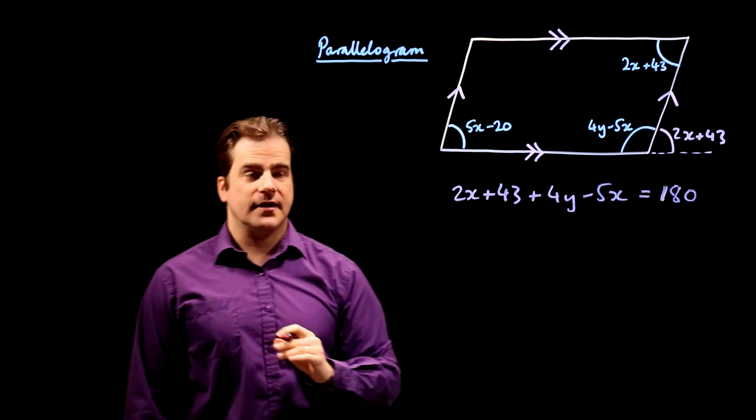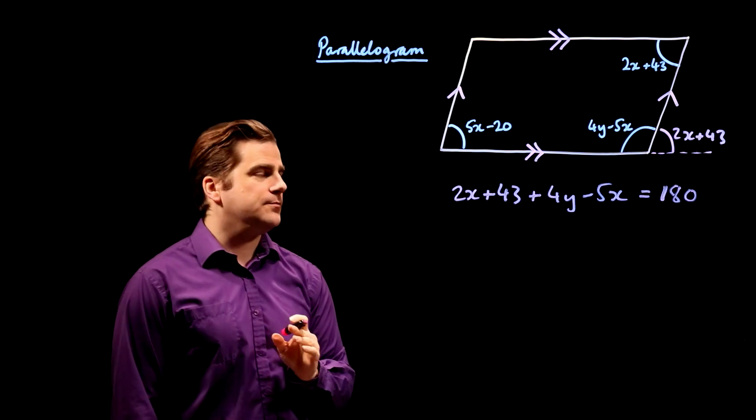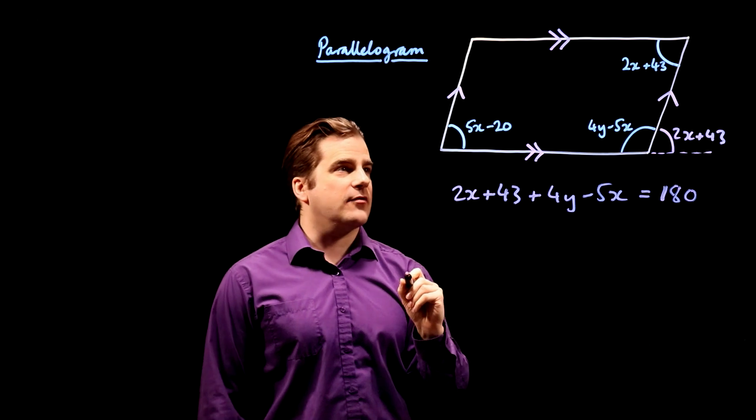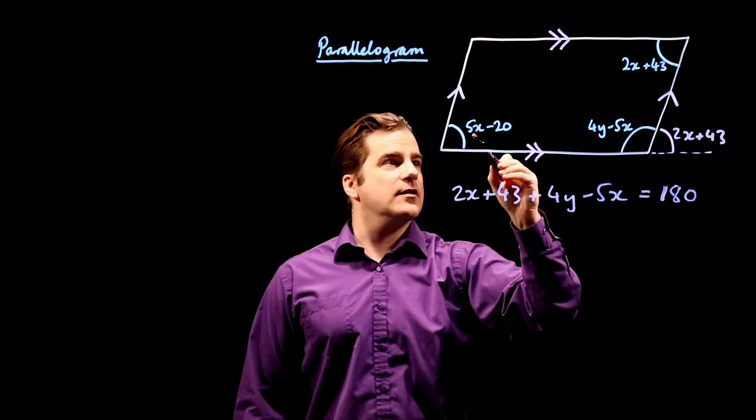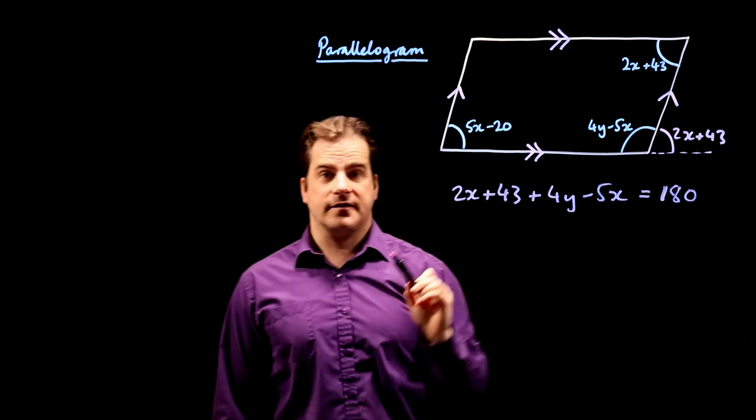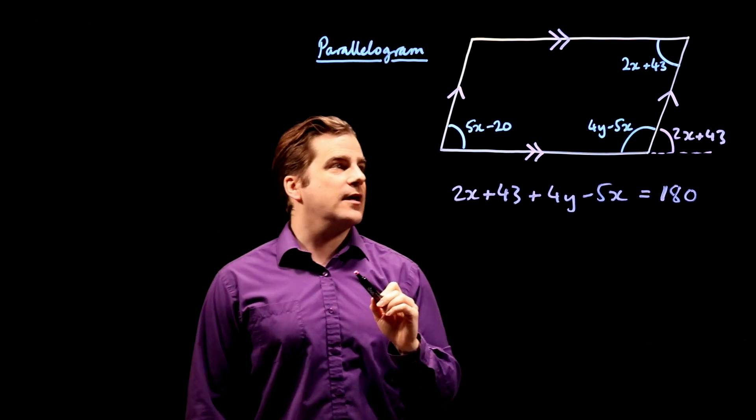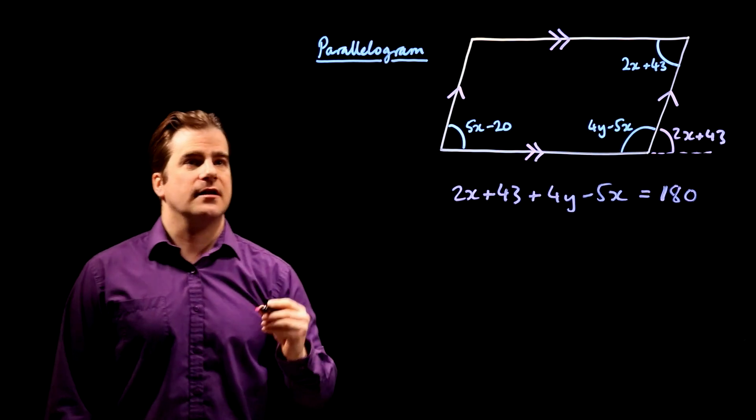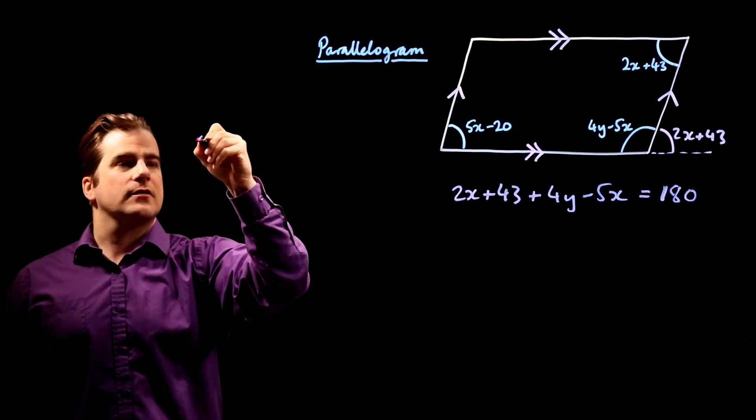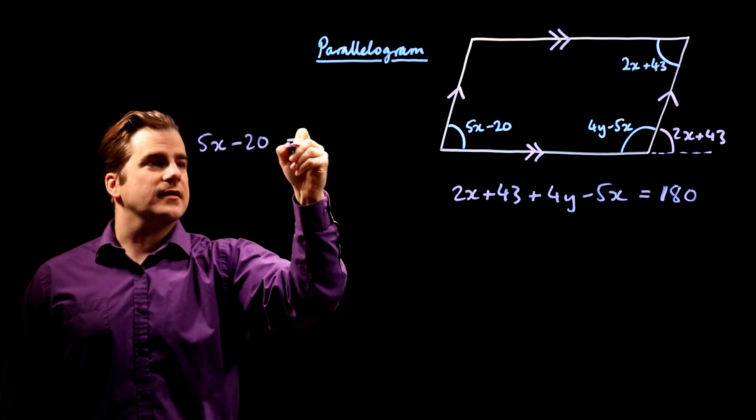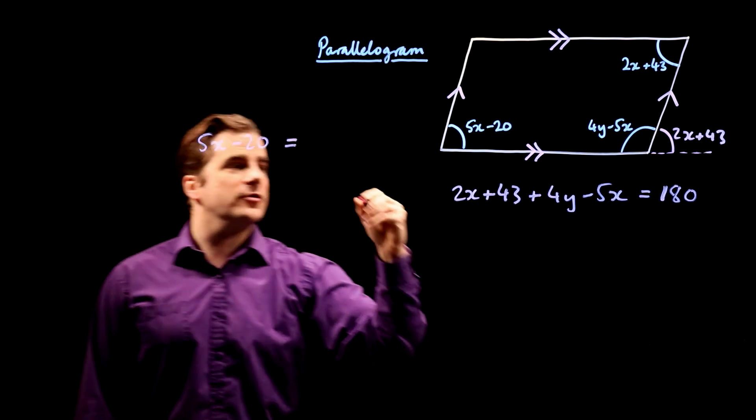How are we going to get our second equation? Well, again, we're going to use the fact it's a parallelogram. And in parallelograms, opposite angles are the same. So therefore, this angle equals that one. So our second equation is 5x minus 20 is equal to 2x plus 43.